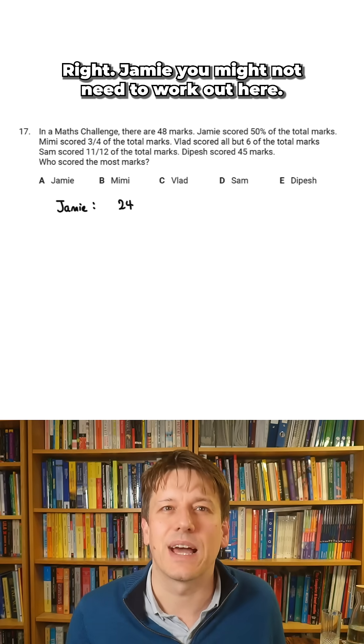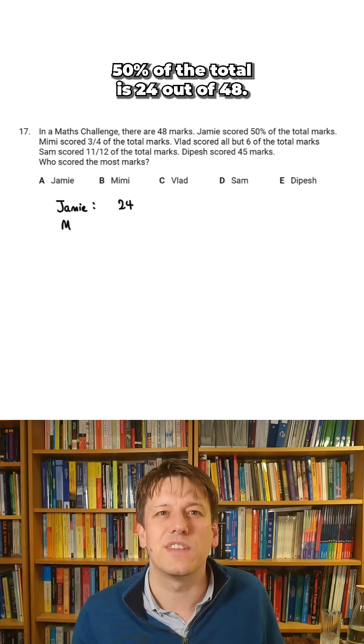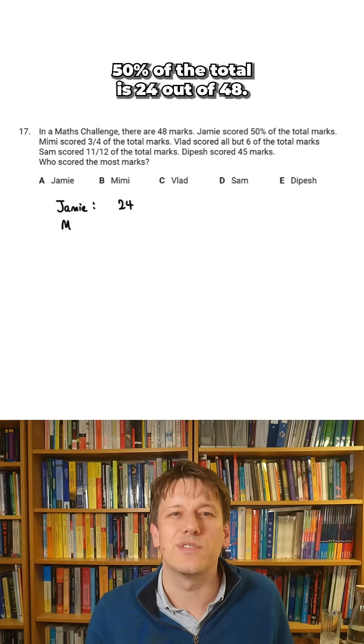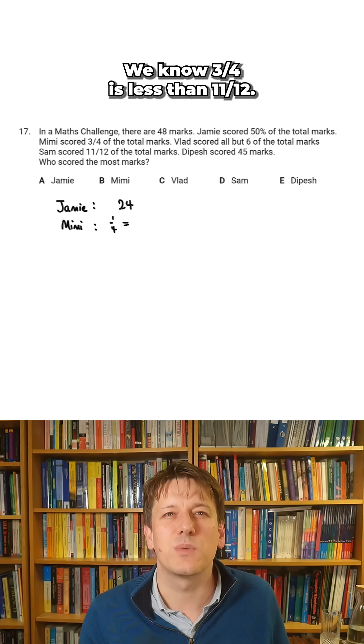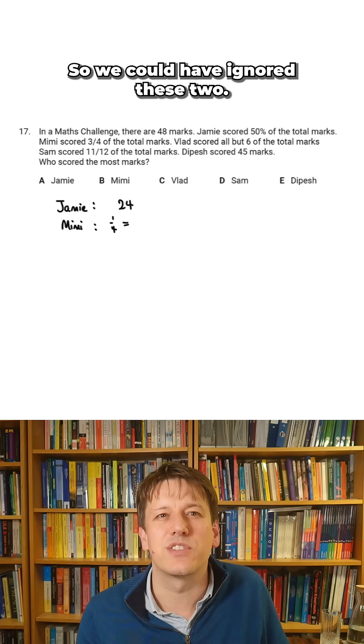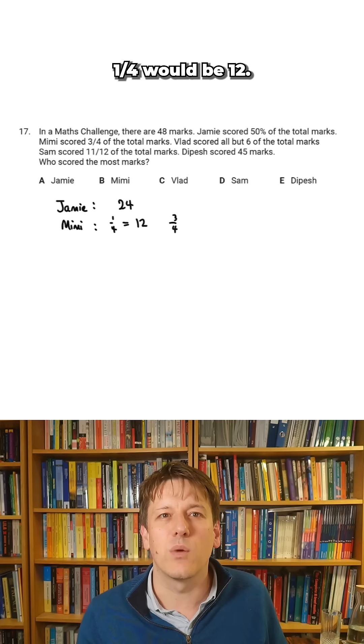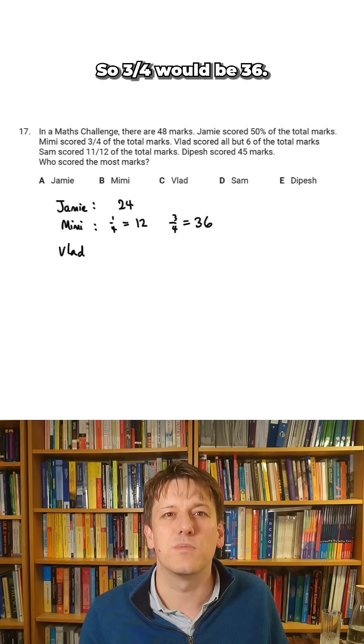Jamie, you might not need to work out here, clearly hasn't got the highest mark here. 50% of the total is 24 out of 48. Mimi then, also three quarters of the total marks. We know three quarters is less than 11 twelfths, so we could have ignored these two. One quarter would be 12, so three quarters would be 36.